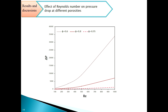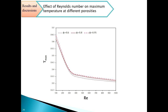This is acceptable because when you reduce the porosity, the pressure drop increases more. The flow passes through the channels, which are filled with the porous medium — metal foam. Here is the effect of Reynolds number on maximum temperature at different porosities. We can see that as Reynolds number increases at each porosity, the maximum temperature decreases.